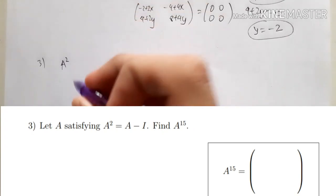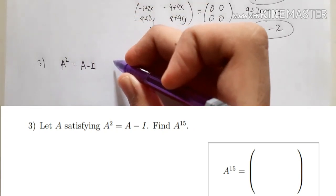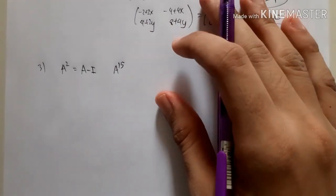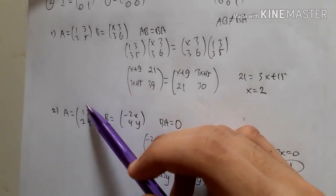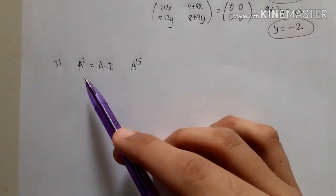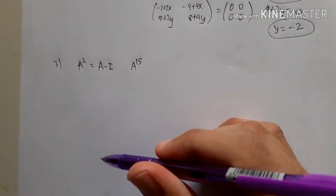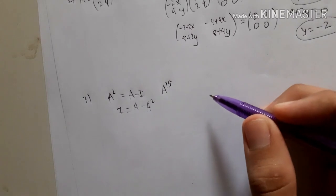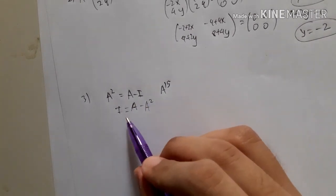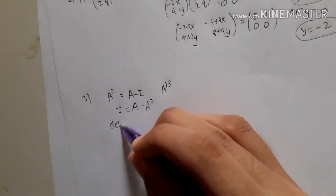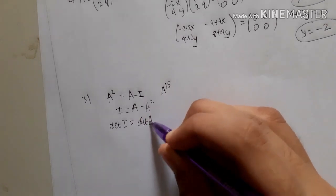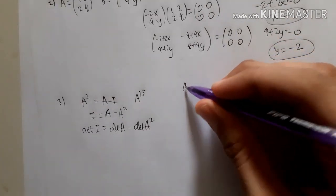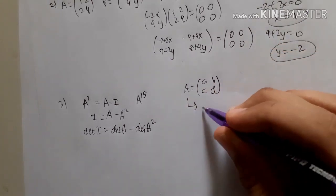For number three, let A satisfy A² = A - I. We need to determine A to the power of 15. This is a unique question. We rearrange so that I is on one side: I = A - A². Now, an important rule is that if you have a matrix equation, you can apply the determinant to each side.